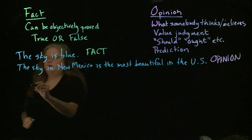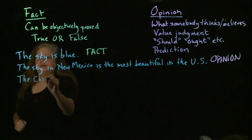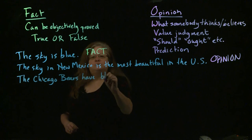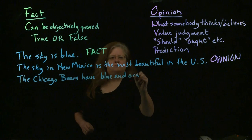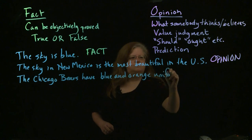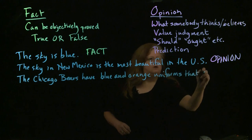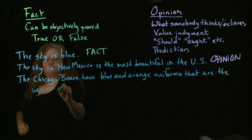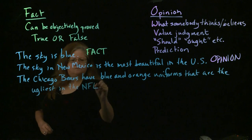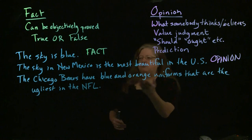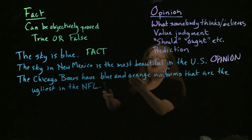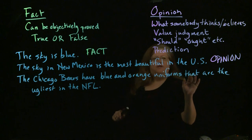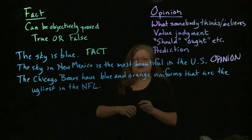How about this one: 'The Chicago Bears have blue and orange uniforms that are the ugliest in the NFL.' What we're looking at here is we start out with something that is a fact — it is a fact that the Chicago Bears have blue and orange uniforms. But we finish this statement with a value judgment that those uniforms are ugly. So we have, again, an opinion.